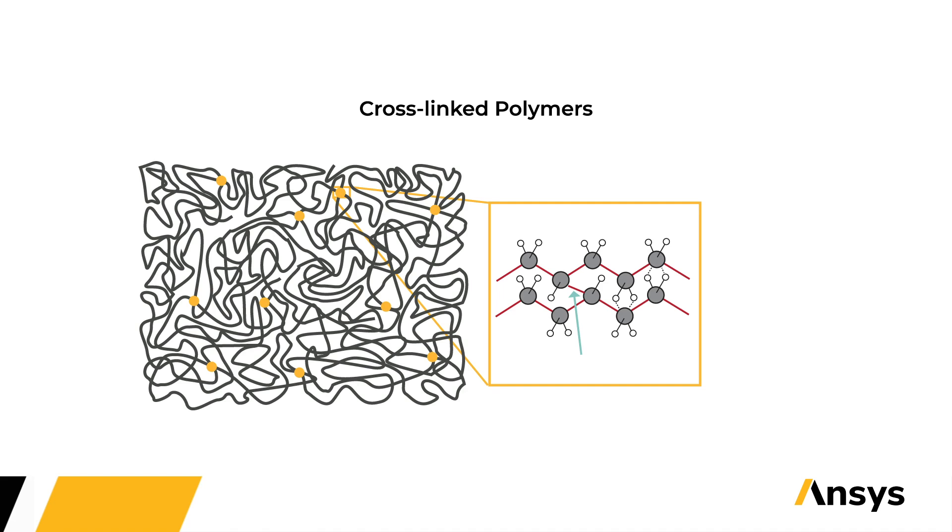Our thermosets don't soften because of these covalent bonds. We need just as much energy to break the covalent bonds between the chains as we do within the chain, so they all break at roughly the same time.